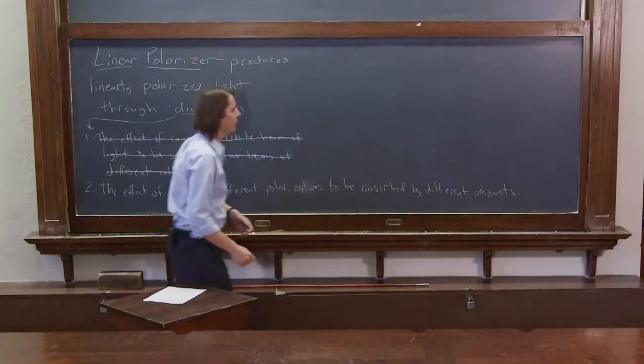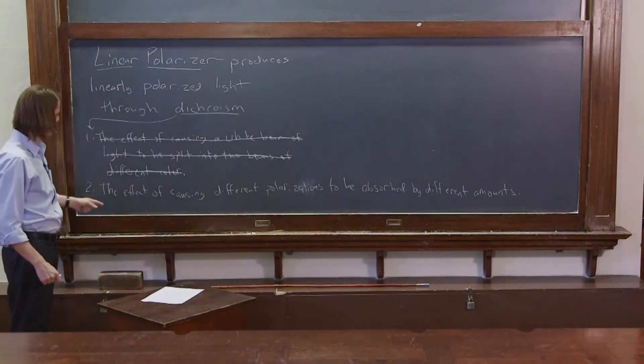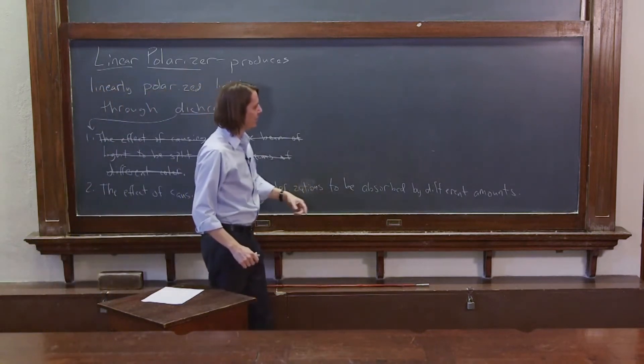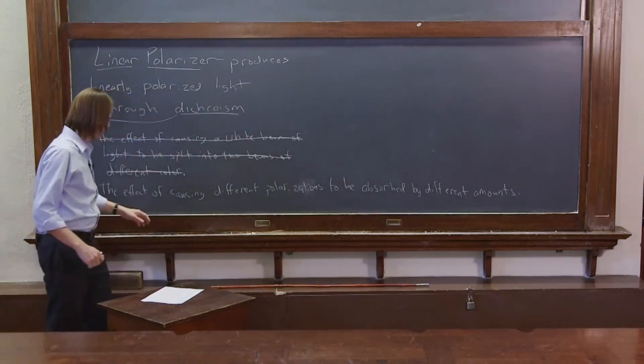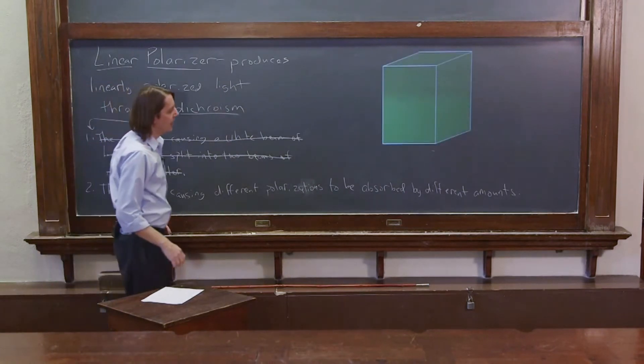So if you speak Latin, you probably think dichroism means this, and you're right. It does mean that. But it also means this, the effect of causing different polarizations to be absorbed by different amounts. And that's the kind of dichroism we mean when we're talking about a linear polarizer.